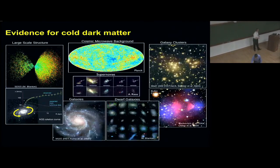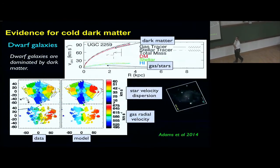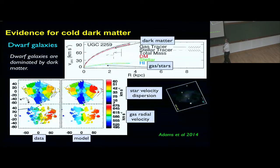Rotation curves of galaxies. I want to point out that the places in the universe, in the galaxies, that have most of the dark matter are actually the dwarf galaxies. Here is an example that are dominated by dark matter, and we have rotation curves for those galaxies too.